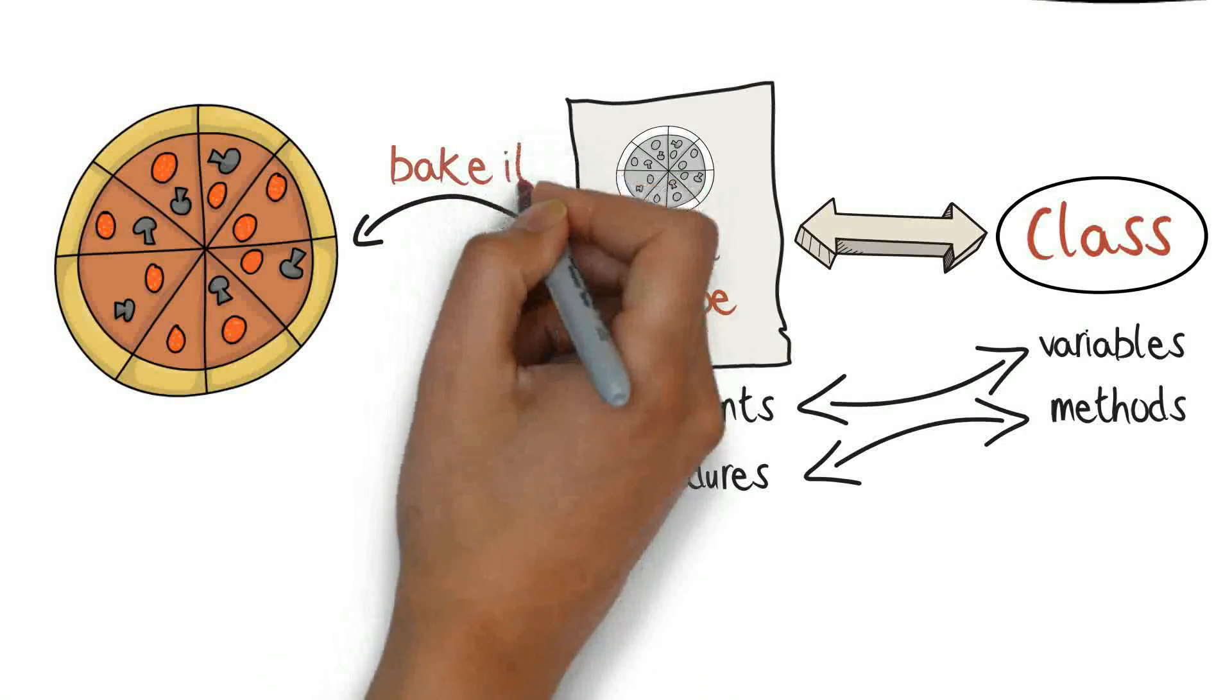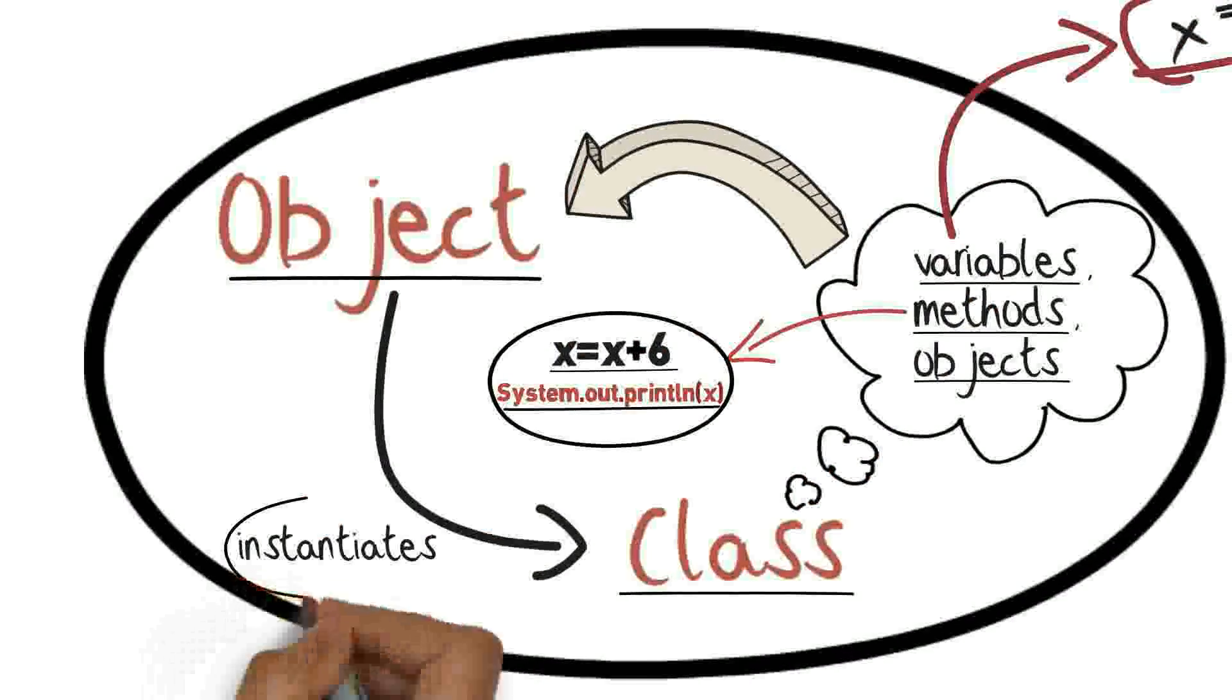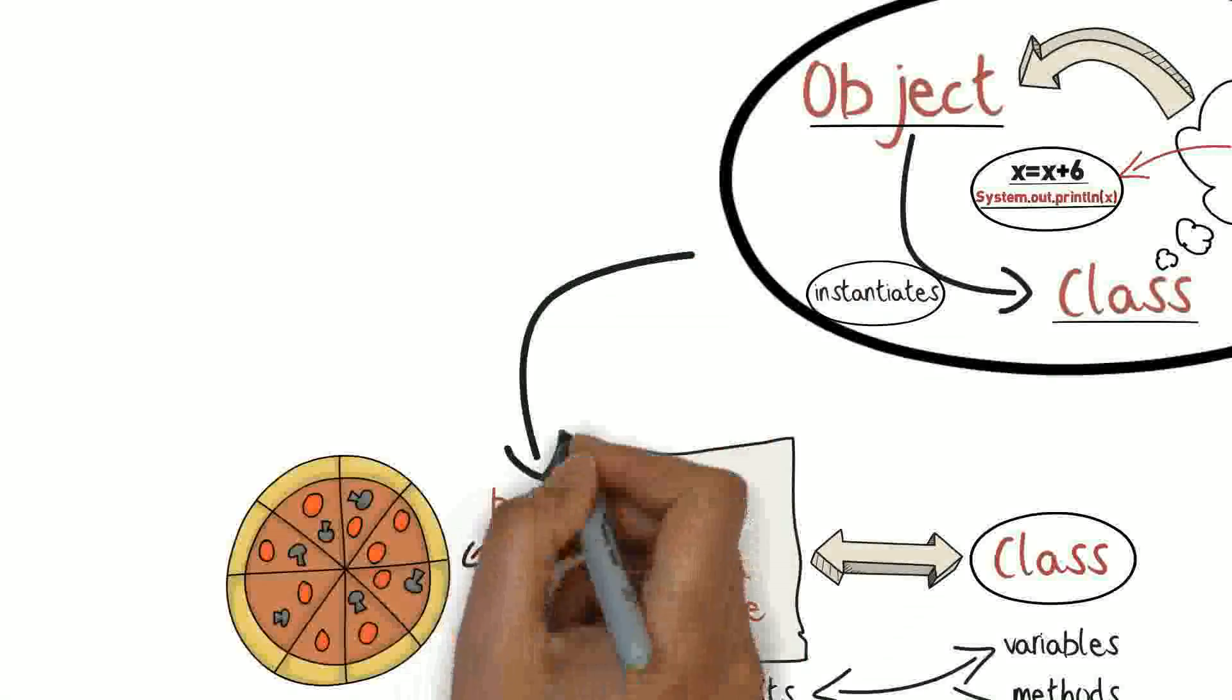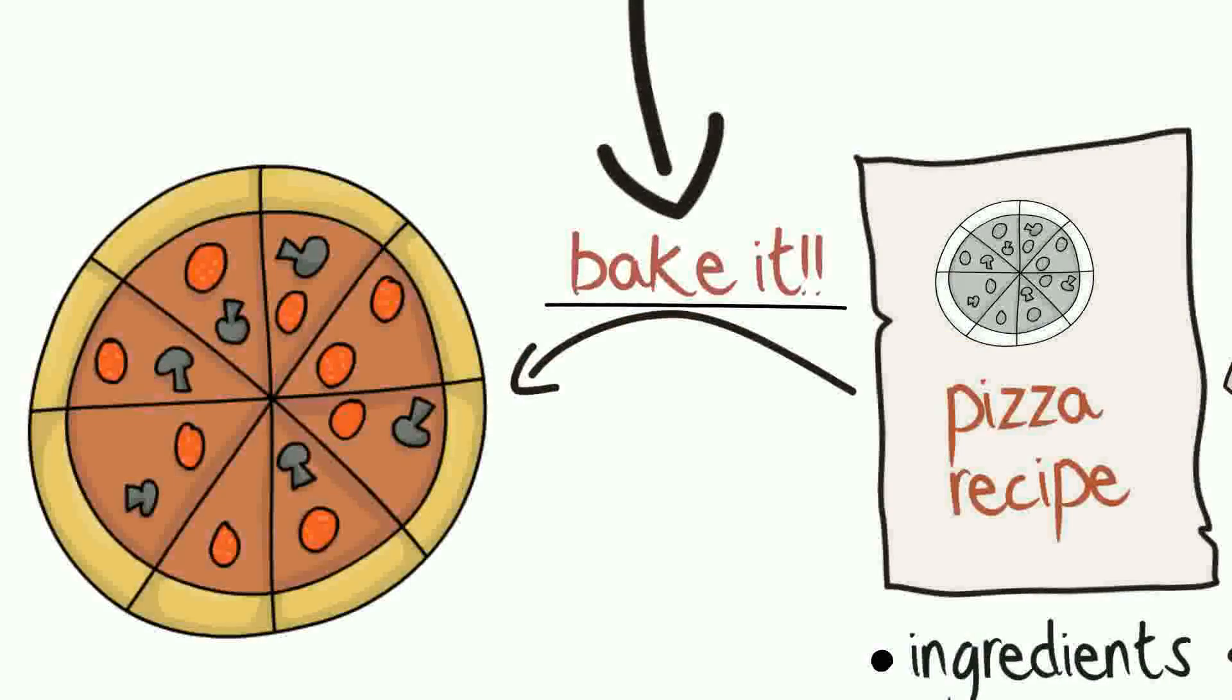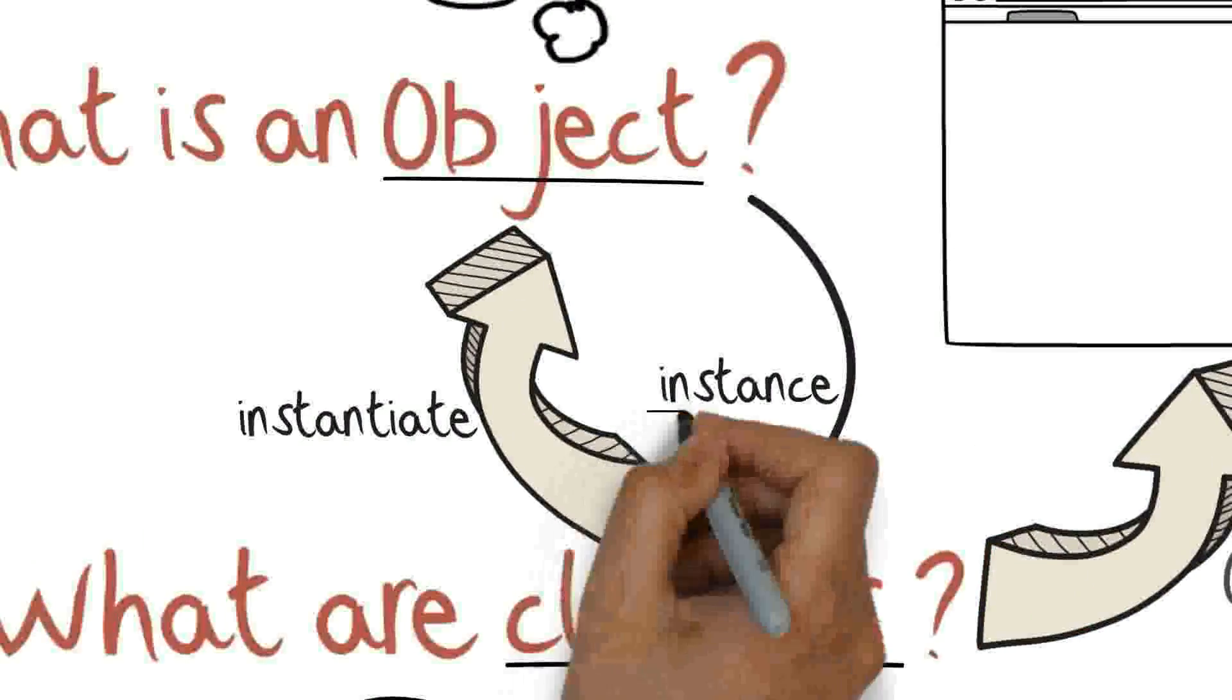You have to do what the recipe asks you to do. Just like the object instantiates a class, the pizza is like an instance of a recipe, just like an object is an instance of a class.